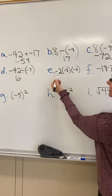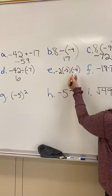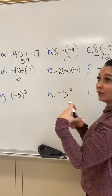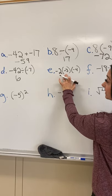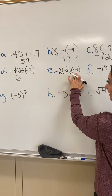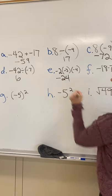For E, negative 2 times negative 3 times negative 4. Remember, parentheses just mean multiply. So negative 2 times negative 3 is positive 6, and then positive 6 times negative 4 is going to be negative 24.